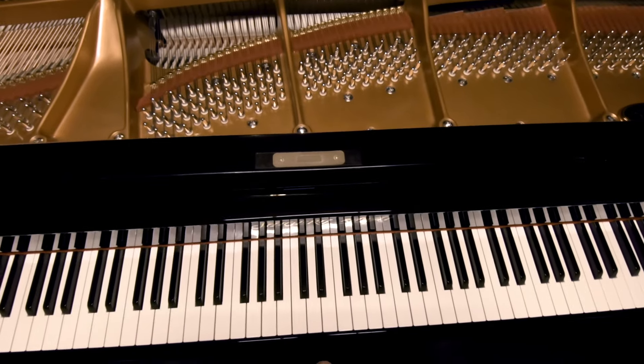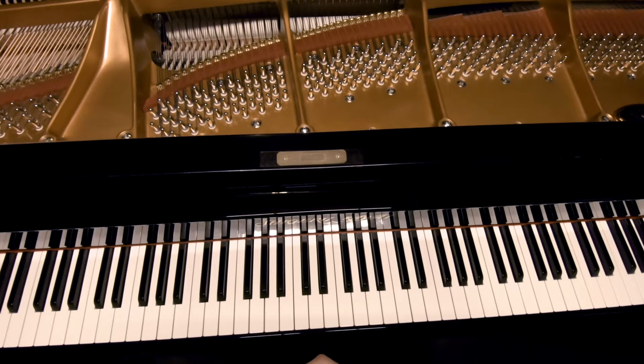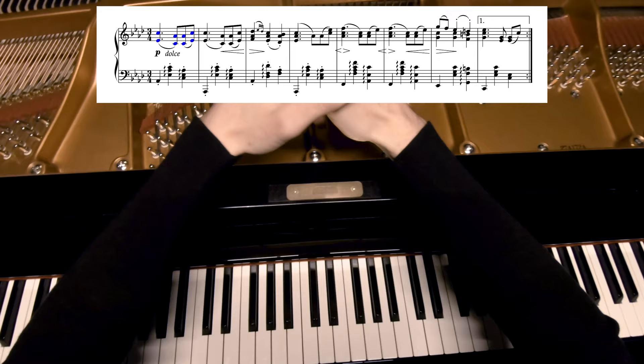This piece is a perfect example of using the wrists to produce a warm sound and a natural legato. Let's take the first bar. As you see, the texture in the right hand consists of four double notes, and they are divided into two groups connected by slurs.